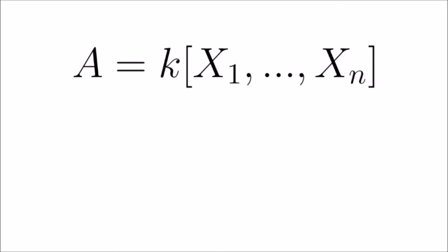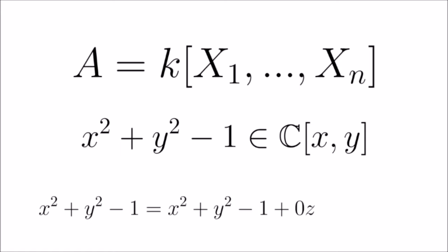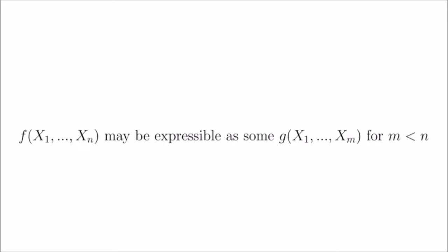Before continuing, we introduce standard notation. We denote by A the ring of polynomials in n variables with coefficients in k — both k and n are assumed known. I'll warn in advance: consider the polynomial x² + y² − 1 in the ring of polynomials of two variables, versus the seemingly identical polynomial x² + y² − 1, which is actually x² + y² − 1 + 0z in the ring of polynomials of three variables. Since our notation using A alone doesn't differentiate these, whose zero sets may have very different topological properties, please remember that a polynomial in n variables may be expressed as a polynomial in m < n variables.